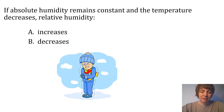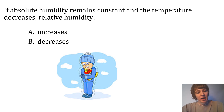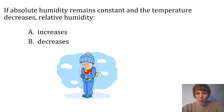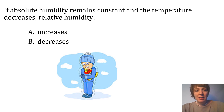If absolute humidity remains constant and the temperature decreases, what happens to relative humidity — does it increase or decrease? If temperature goes down, the air is colder, and cold air can't hold as much vapor as warm air. So without gaining or losing any moisture at all, that colder air parcel is actually closer to being saturated, meaning relative humidity actually increases in this case.